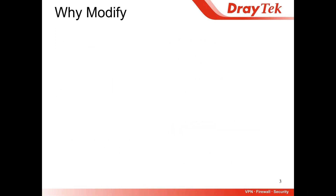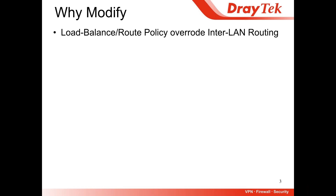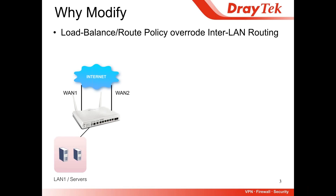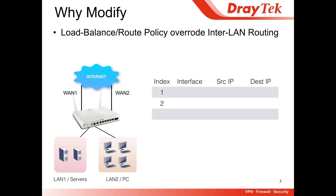Why did we modify route policy? In the past, our low-balance route policy overruled inter-LAN routing. Imagine you have dual WAN — LAN1 for your servers and LAN2 for your LAN clients, the PCs. So we created two policies for load balance.